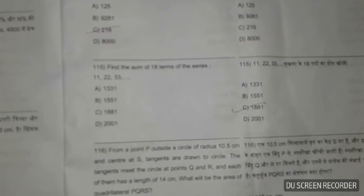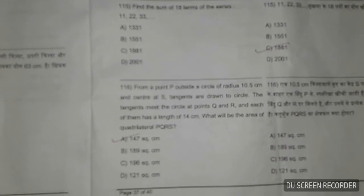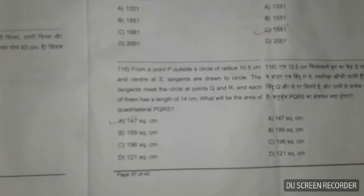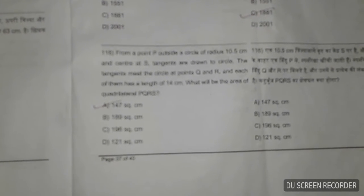For a point P outside a circle of radius 10.5 centimeters with center at S, tangents are drawn to the circle. The tangents meet the circle at points Q and R, and each has a length of 14 centimeters. What will